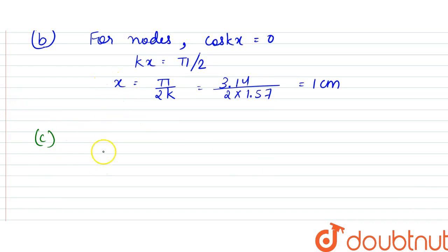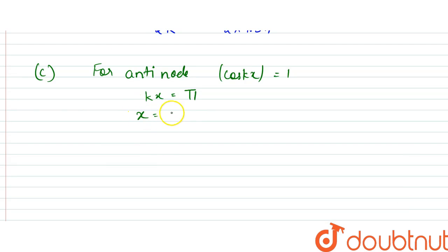Next, for anti-node, cos kx should be equal to 1. So, kx here is equal to π. The smallest value of x could be equal to π by k, which is equal to 3.14 by 1.57, that is 2 centimeters. So, anti-node is found at 2 centimeters.